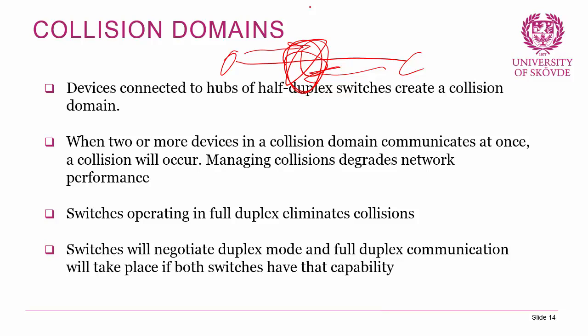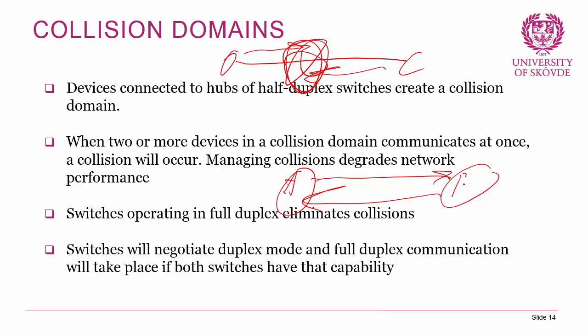Switches operating in full-duplex eliminate collisions — a full-duplex connection is effectively two lines, one going in each direction, so both devices can send simultaneously with no collision. Modern switches negotiate duplex mode, and full-duplex communication takes place if both sides have that capability, which is almost always the case with modern equipment.